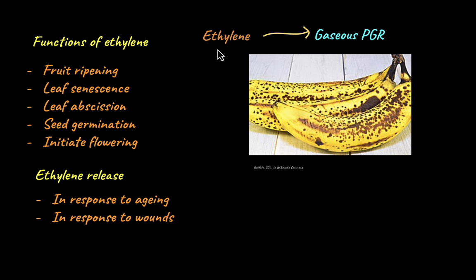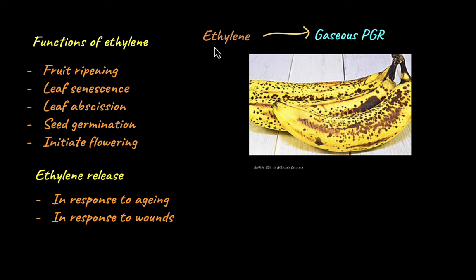Ethylene has a wide variety of uses in the agriculture industry. It is sprayed on fruits to make them ripen faster. While this is beneficial, faster ripening of fruits also decreases their shelf life. So to increase the shelf life of fruits, they are often sprayed with an inhibitor or blocker of ethylene that inhibits its production. With ethylene production being inhibited, fruits take a longer time to ripen, which increases their shelf life.